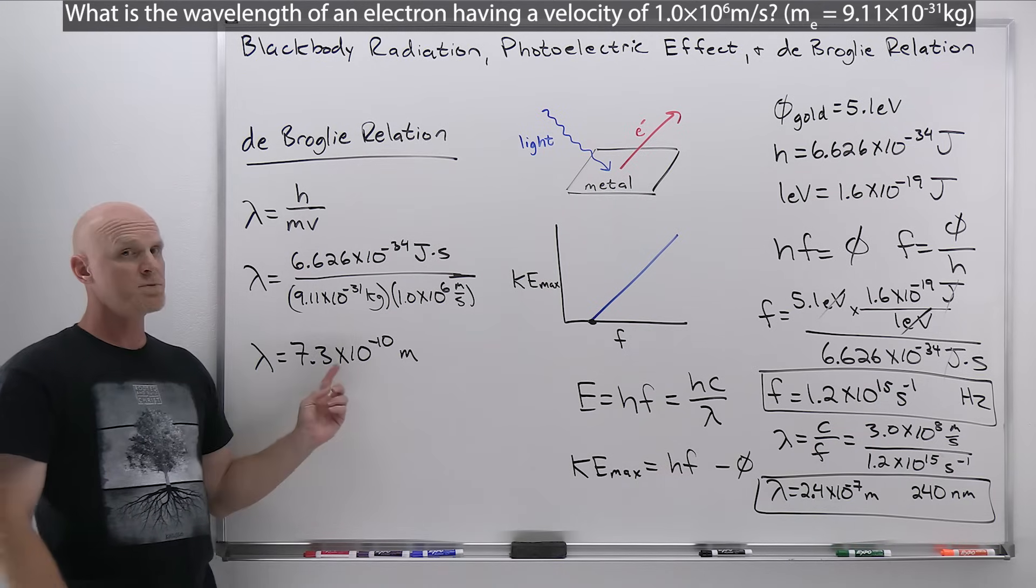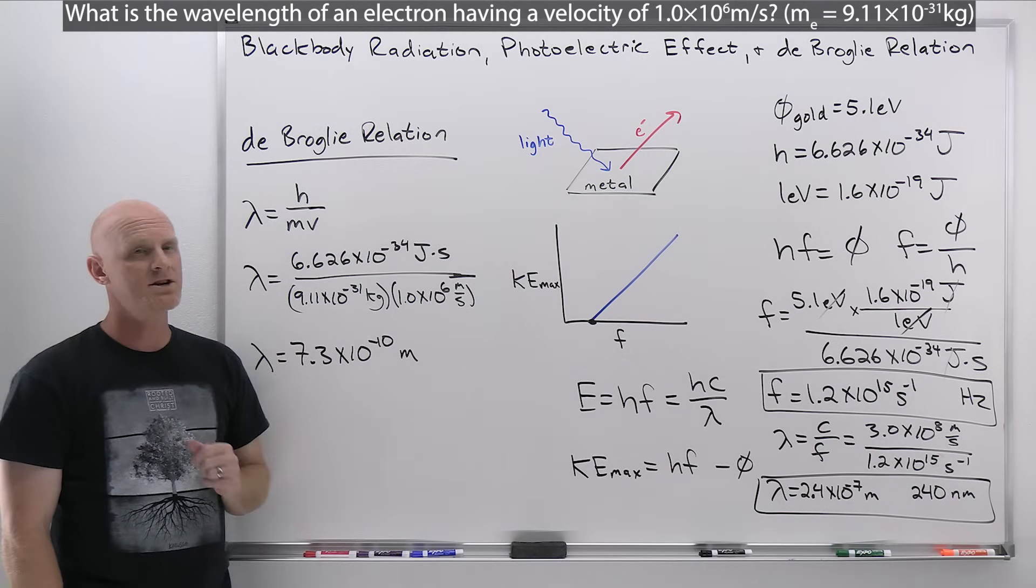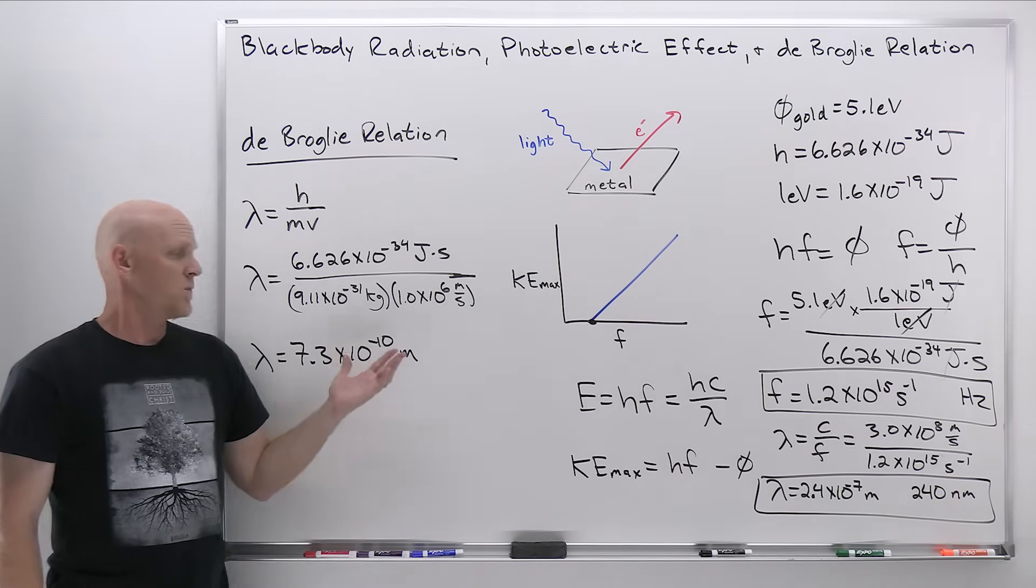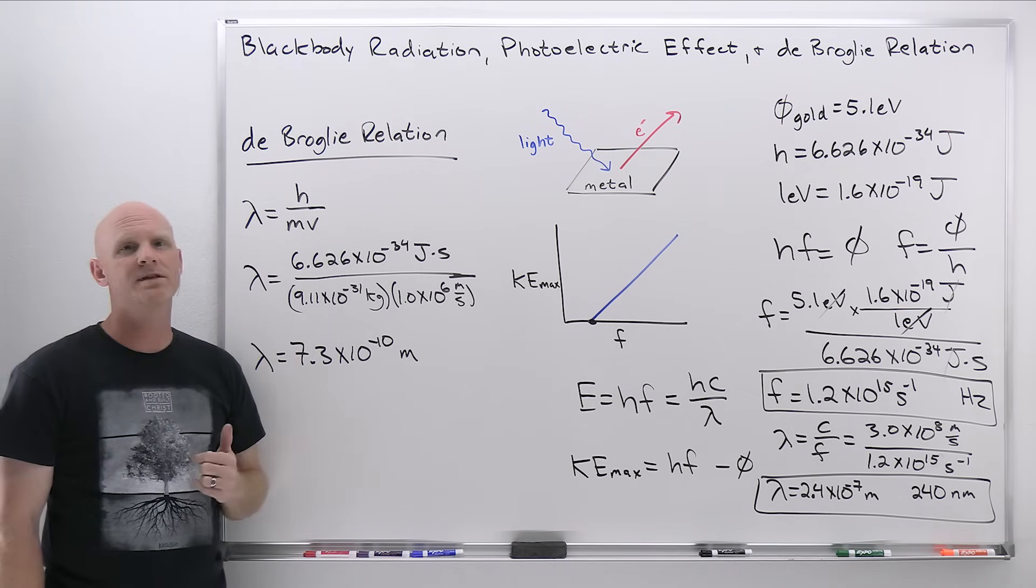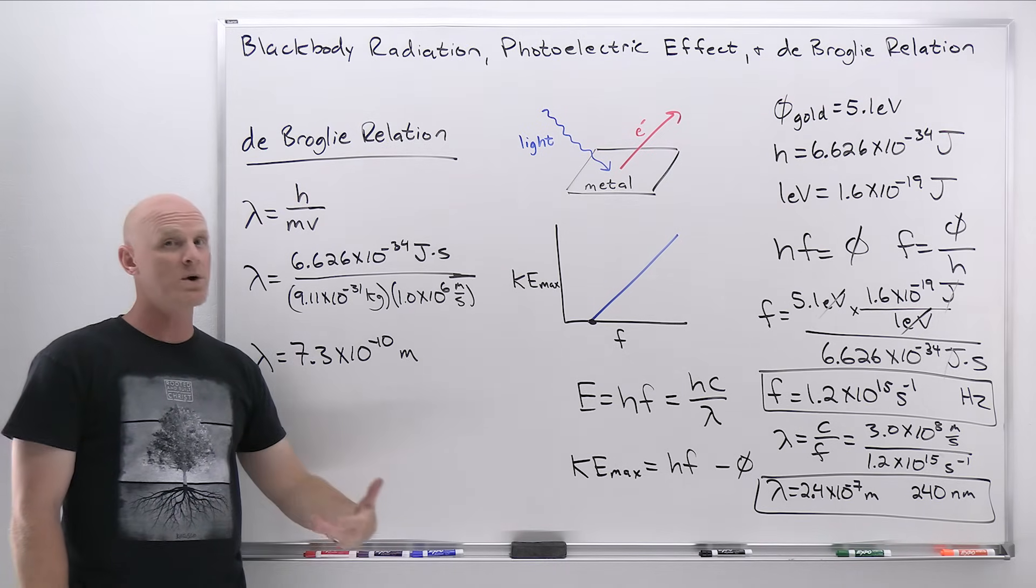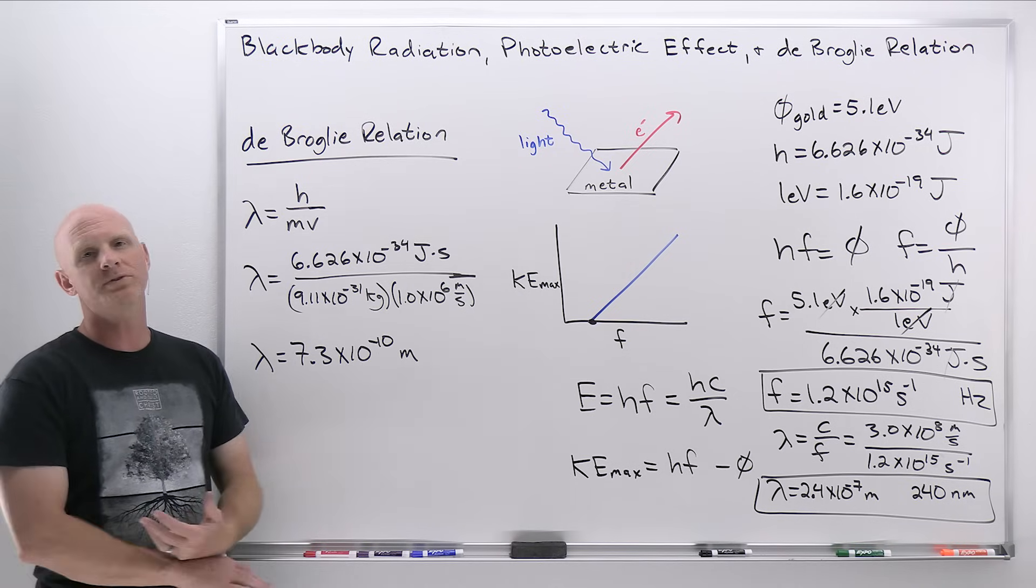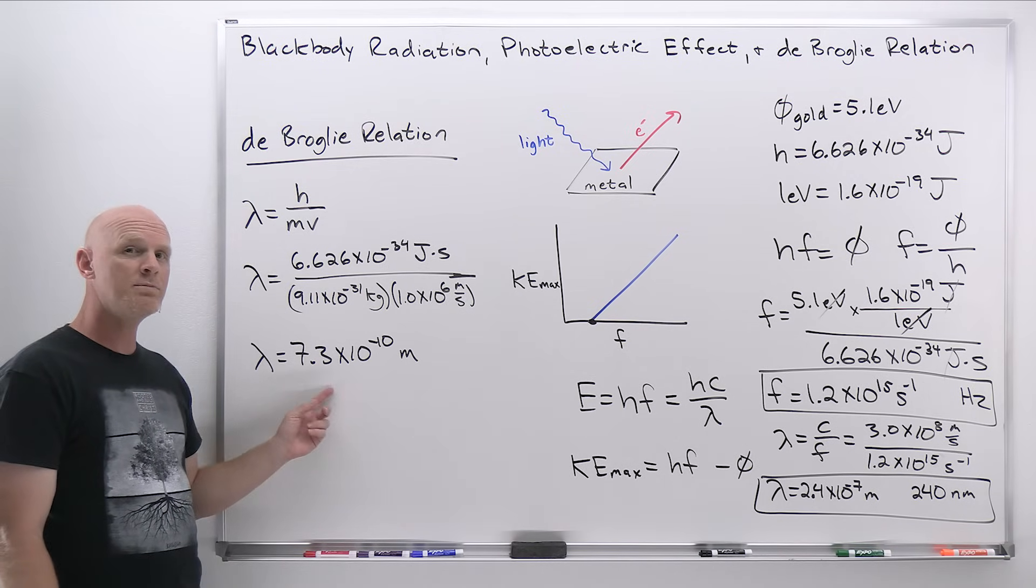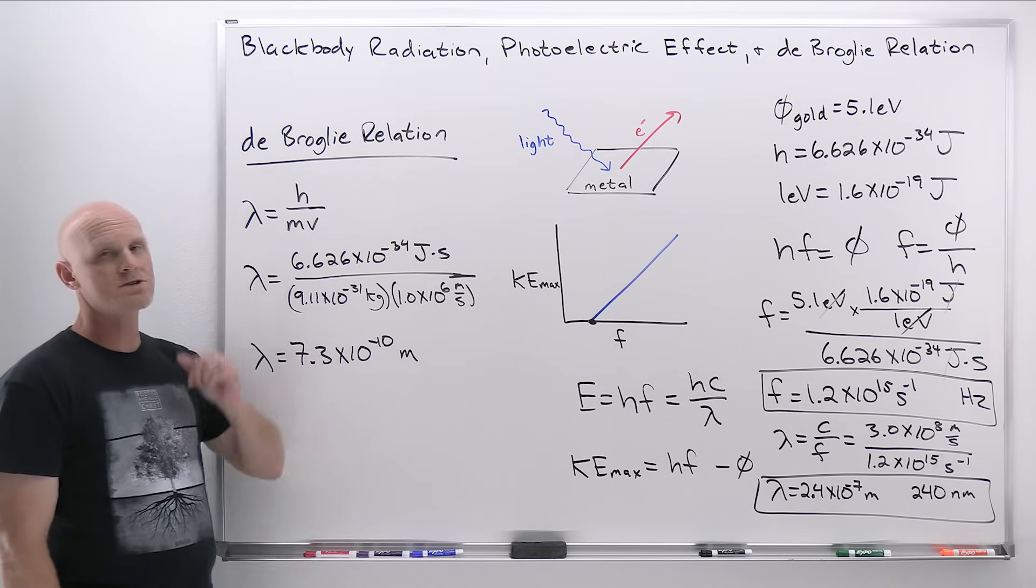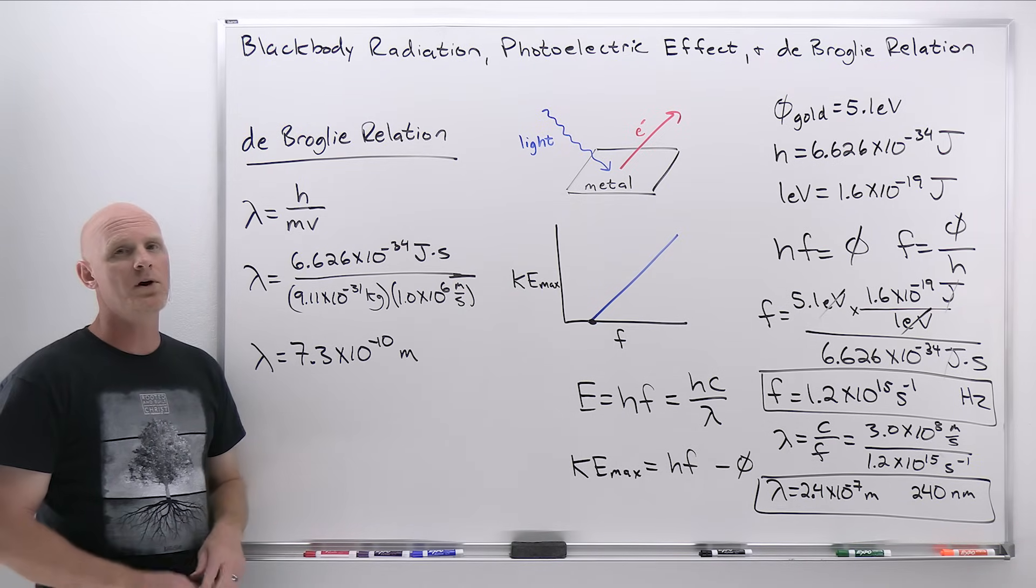So it turns out this is super tiny, but it is measurable. Whereas you or I, when we're moving down the street, we're so large that we might have a wavelength like on the order of 10 to the minus 40 meters or something like that, which is completely unmeasurable. But this, as tiny as it is, can be measured. And once again, de Broglie was proved correct not too long thereafter.